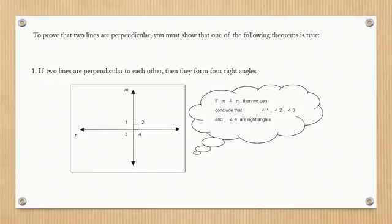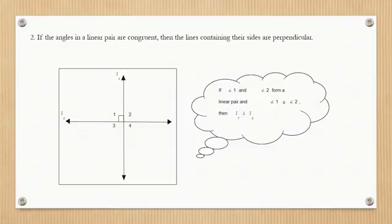If line M is perpendicular to line N, then we can conclude that angles 1, 2, 3, and 4 are right angles.